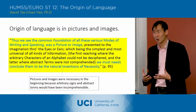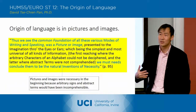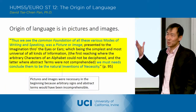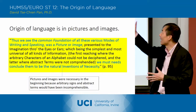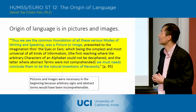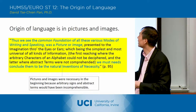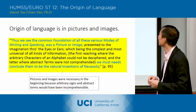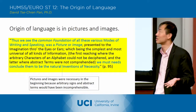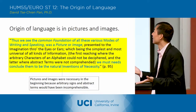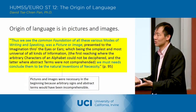In general, what he's saying is that the origin of language lies in these pictures and images. So he's saying the earliest language had these pictures and images, and he says this really toward the end. He says, 'Thus we see the coming foundation of all these various modes of writing and speaking was a picture or image.' So that lies at the origin of language in a sense.